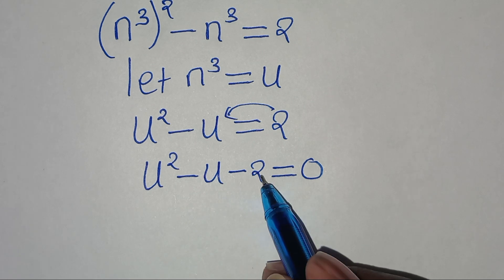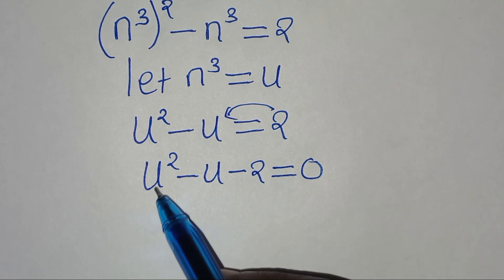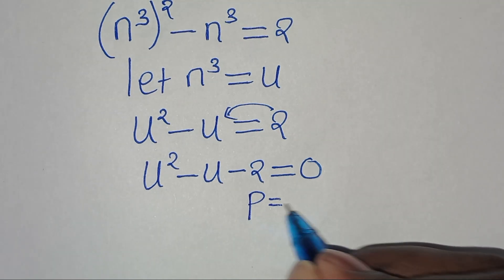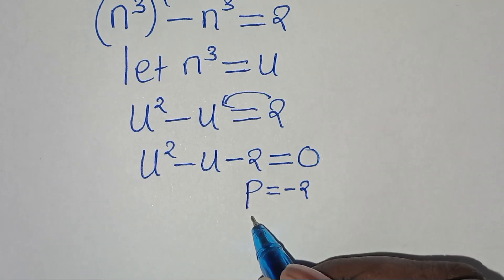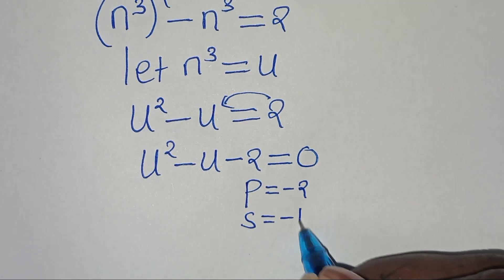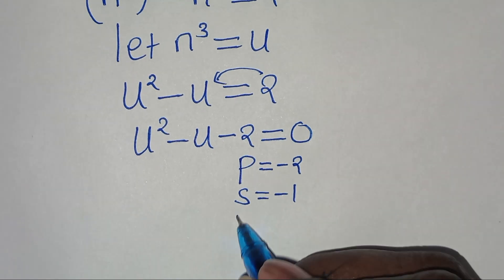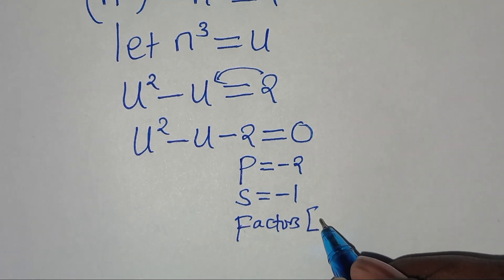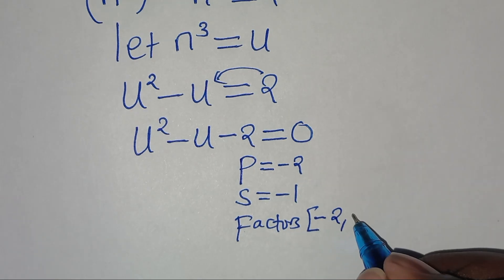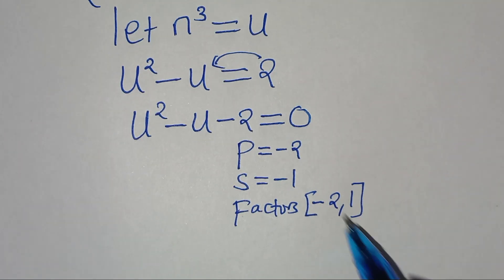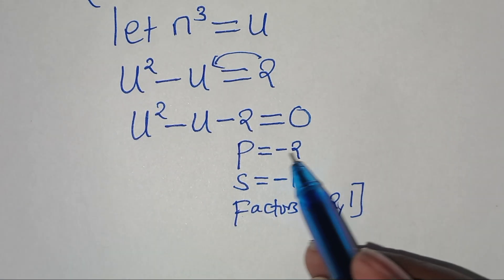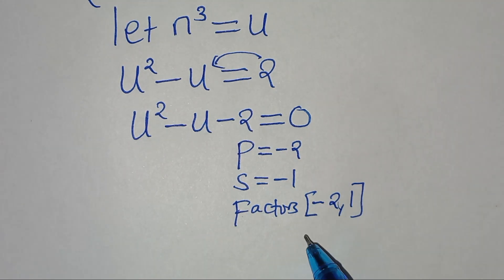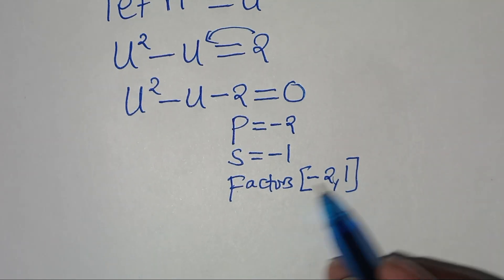This is a quadratic equation that we can solve by factorization. We have the product here is minus 2 and the sum is equal to minus 1. So we can get factors here. The factors are minus 2 and 1, since minus 2 times 1 is minus 2, and minus 2 plus 1 is minus 1.